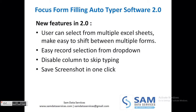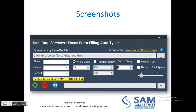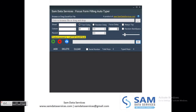The new features of Focus Form Filling Auto Taper 2.0 are as follows: it allows the user to select multiple sheets from Excel, which makes it easy to work with multiple forms or applications. Record selection has been made easy through a drop-down selection. It provides a disable column option to skip typing for a disabled column. It also allows you to take a screenshot in one click. This is the screenshot of Focus Form Filling Auto Taper 2.0.